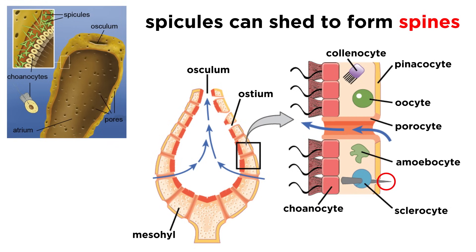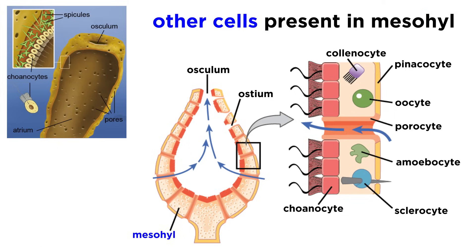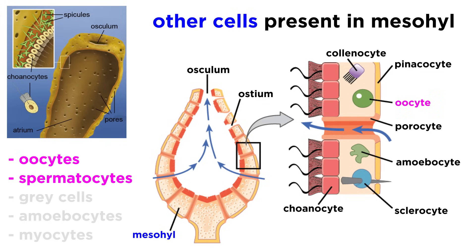Many sponges can shed their spicules, forming a dense carpet of spines around them. Other species produce toxins that prevent other sessile organisms, such as bryozoans or sea squirts, from growing on or near them. Many species of sponge also have a variety of other cells that move through their mesohyl, including oocytes and spermatocytes — the reproductive cells — and gray cells which act like immune cells in other animals.